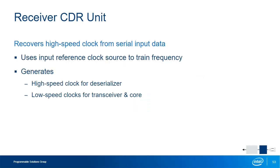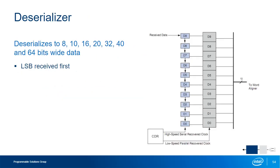The receiver CDR unit detects and extracts the clock from the serial input data for use by the rest of the PCS. The CDR unit must first be trained to the correct frequency by an input reference clock source — a dedicated input I/O pin or the output of another PLL. Once trained, it switches over to track the incoming data stream using transitions in the data signal. The extracted clock generates two output clocks: a high-speed clock driving the deserializer and a low-speed clock driving the deserializer and the rest of the receiver PCS. The deserializer converts the incoming serial data stream into parallel data in widths of 8 up to 64 bits wide, with the least significant bit always received first.